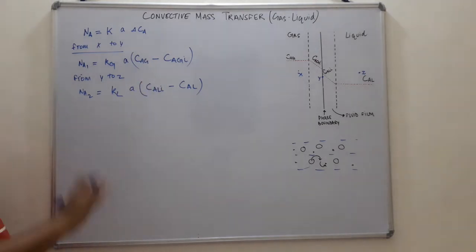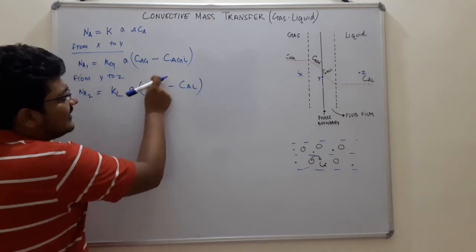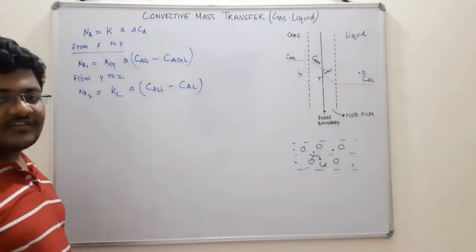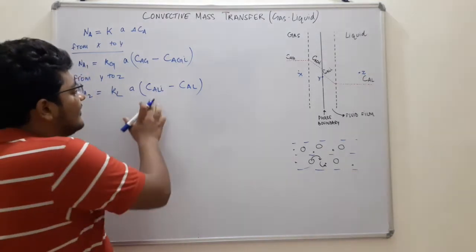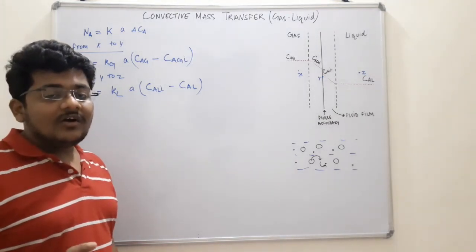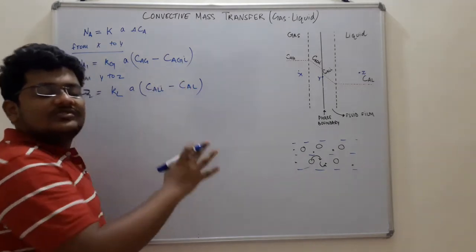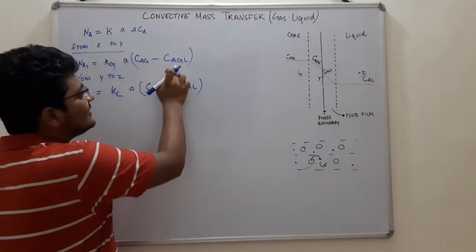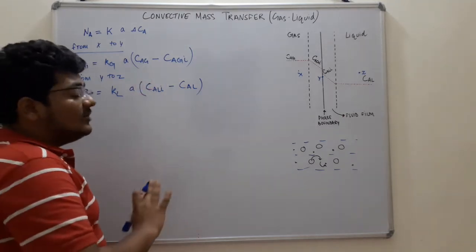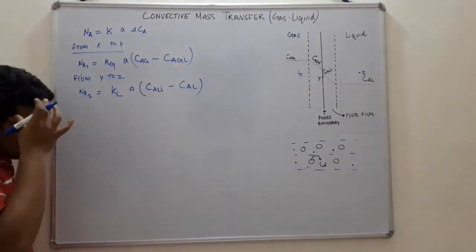There is a problem: we don't know the interface concentrations C_AgI and C_ALi, and practically we cannot calculate them. So we need to do some mathematics to eliminate these two interface concentration terms and get a formula expressed only in bulk concentrations or other known terms.